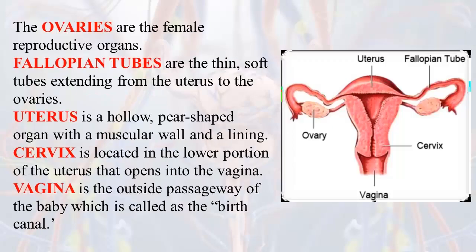The ovaries are the female reproductive organs. Fallopian tubes are the thin, soft tubes extending from the uterus to the ovaries. The uterus is a hollow, pear-shaped organ with a muscular wall and lining. The cervix is located in the lower portion of the uterus that opens into the vagina. The vagina is the outside passageway of the baby, which is called the birth canal.